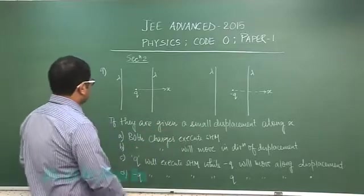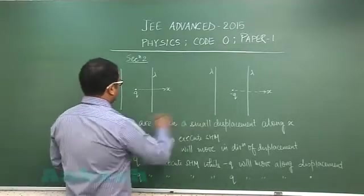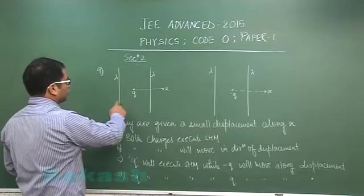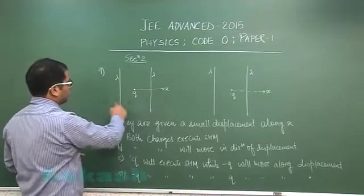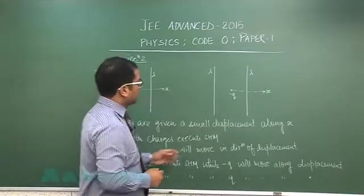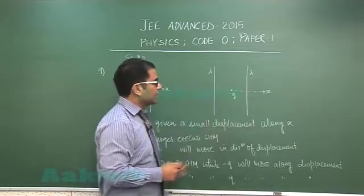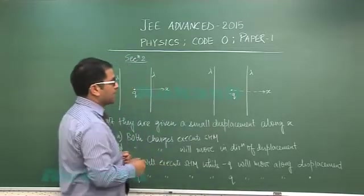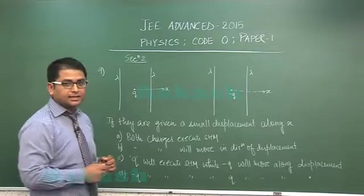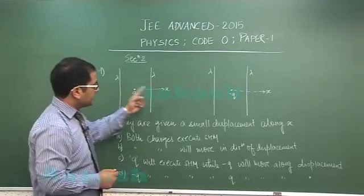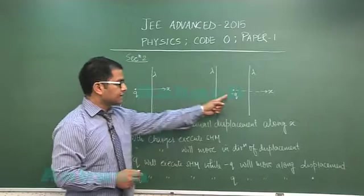Here there are two setups given. In the first setup, two infinity long line charges plus lambda and in the second setup, two infinity long line charges of plus lambda linear charge densities have been given. At the center there are two charges q and minus q.